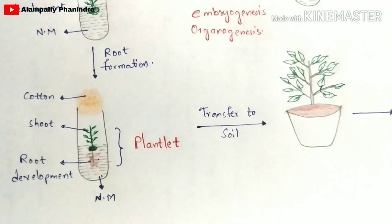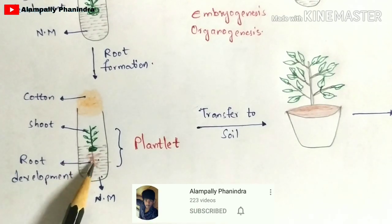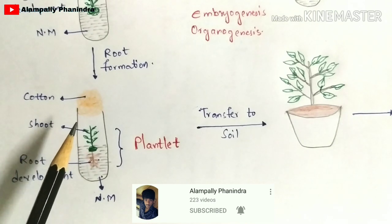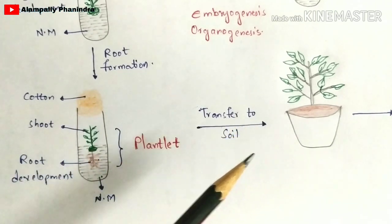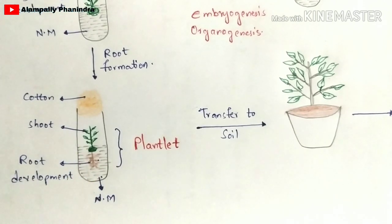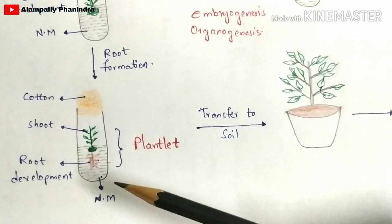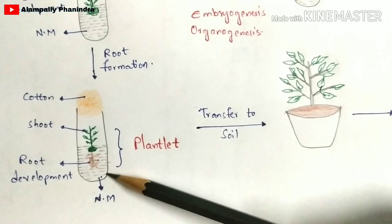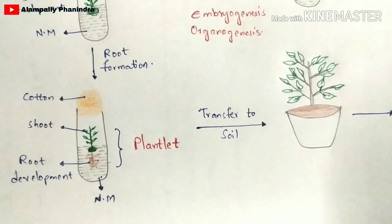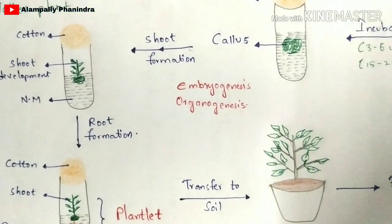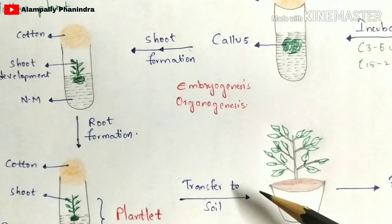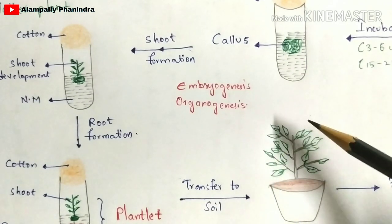After shoot formation, root formation occurs. Once the root system is developed, this structure is called a plantlet — it is very small in form and is still present in the test tube. The shoot system with leaves and stem develops first, then the roots develop. This entire process occurs within the nutrient medium. Finally, the plantlet is transferred into soil to get well developed into a complete mature plant, and these plants are supplied to farmers who cultivate them in their fields for yielding.